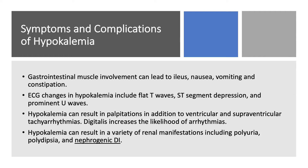EKG changes in hypokalemia include inverted or flat T waves, ST segment depression, and the characteristic prominent U waves. Hypokalemia can result in palpitations, and sometimes ventricular and supraventricular tachyarrhythmias — especially if the patient is on digitalis. Hypokalemia can also cause renal manifestations: polyuria, polydipsia, and nephrogenic DI. Low potassium and high calcium both cause nephrogenic DI because they decrease the effect of vasopressin or ADH on the collecting tubule.